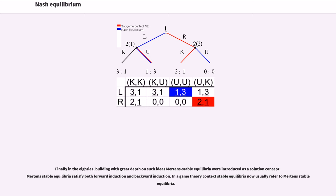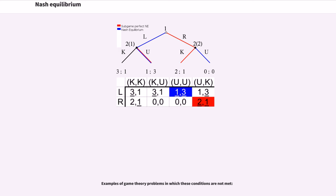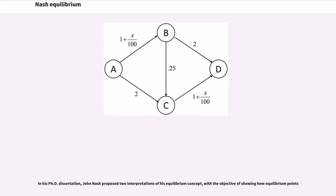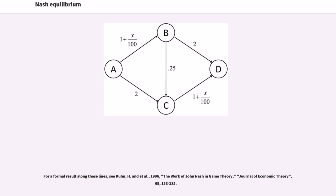Finally, in the 1980s, building with great depth on such ideas, Mertens' stable equilibria were introduced as a solution concept. Mertens' stable equilibria satisfy both forward induction and backward induction. In a game theory context, stable equilibria now usually refer to Mertens' stable equilibria. If a game has a unique Nash equilibrium and is played among players under certain conditions, then the Nash strategy set will be adopted. Sufficient conditions to guarantee that the Nash equilibrium is played are discussed in the literature. In his PhD dissertation, John Nash proposed two interpretations of his equilibrium concept. A second interpretation, that Nash referred to as the mass action interpretation, is less demanding on players. For a formal result along these lines, see Kuhn, H.N. et al., 1996, The Work of John Nash and Game Theory, Journal of Economic Theory, 69, 153–185.